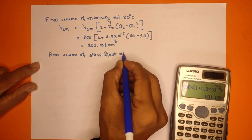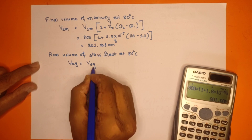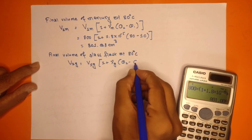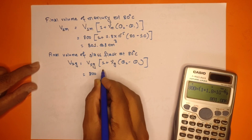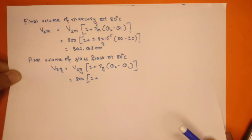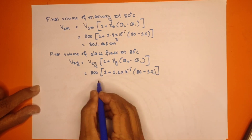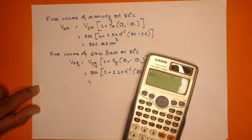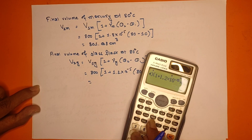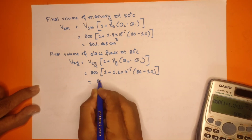For the glass flask: B₂ glass equals initial volume of glass into 1 plus gamma glass into (final temperature minus initial temperature). That is 800 into 1 plus 1.2 into 10 to the power minus 5 into (80 minus 10), which gives 800.672 cm³.